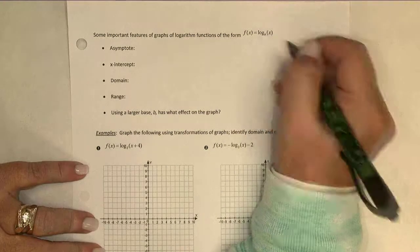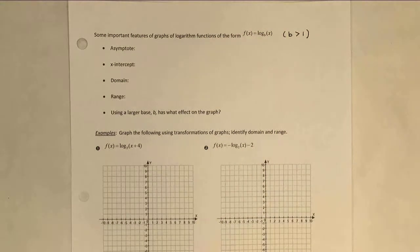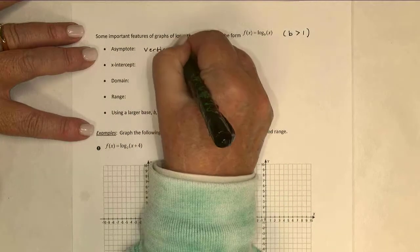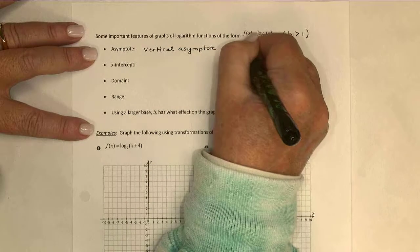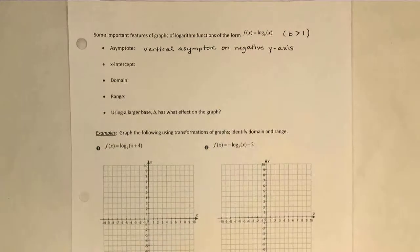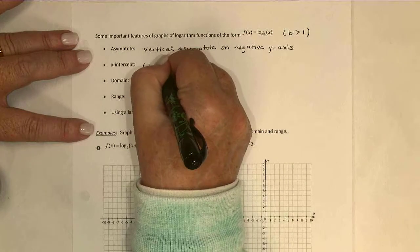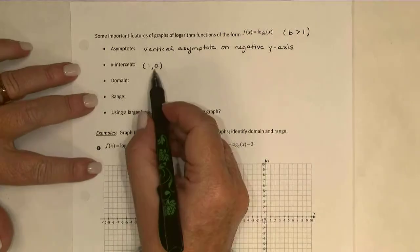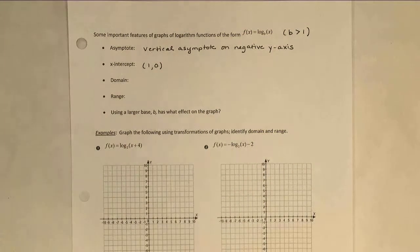Log base b of x. And I'm going to assume that our base b is larger than 1. We've seen that we have a vertical asymptote on the y-axis, on the negative y-axis, in fact. And in both cases, as I just pointed out, the x-intercept was 1. All of these graphs go through the point 1, 0, which does make sense when you think about it, right? Anything to the 0 power is what gives you 1.